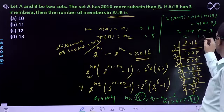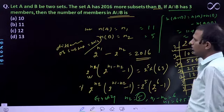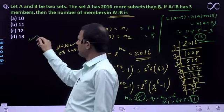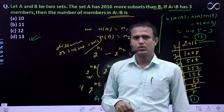This gives us 16 minus 3, which equals 13. So option D is correct. Okay, thank you.